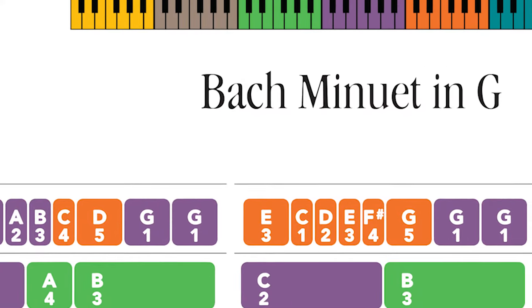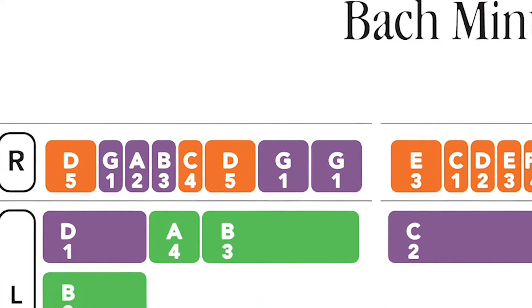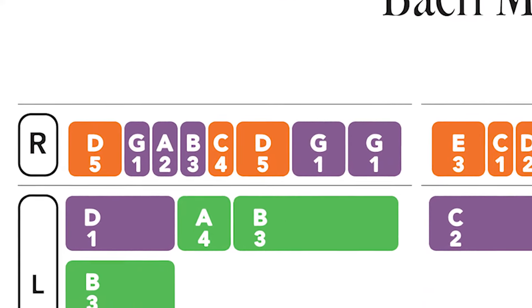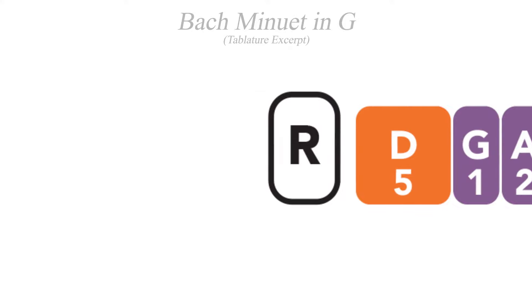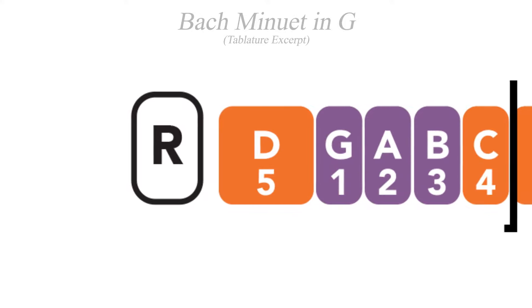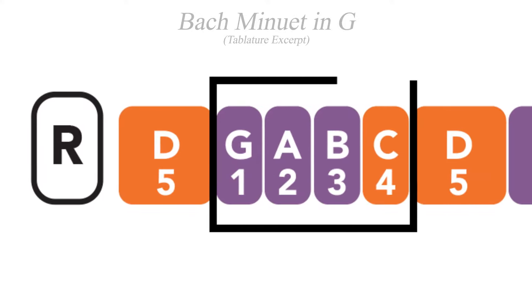Let's take a look at Bach's Minuet in G. We'll look at the right hand first. The phrasing of the melody is determined by the different widths of each tile. You can see that the four notes that come after the first note are more narrow, and thus they are played more quickly.